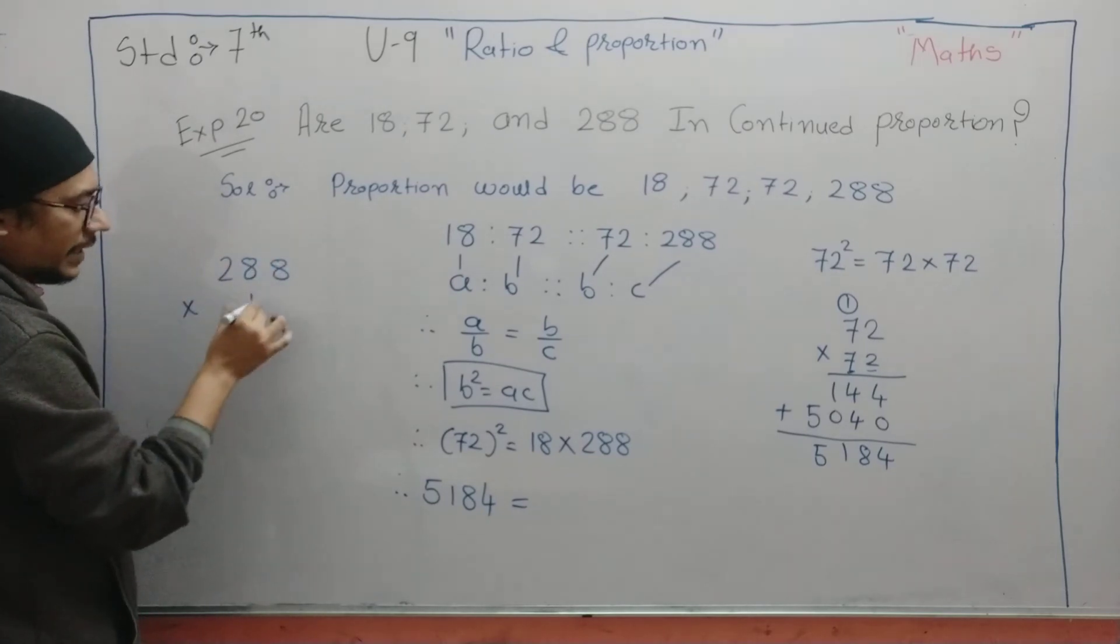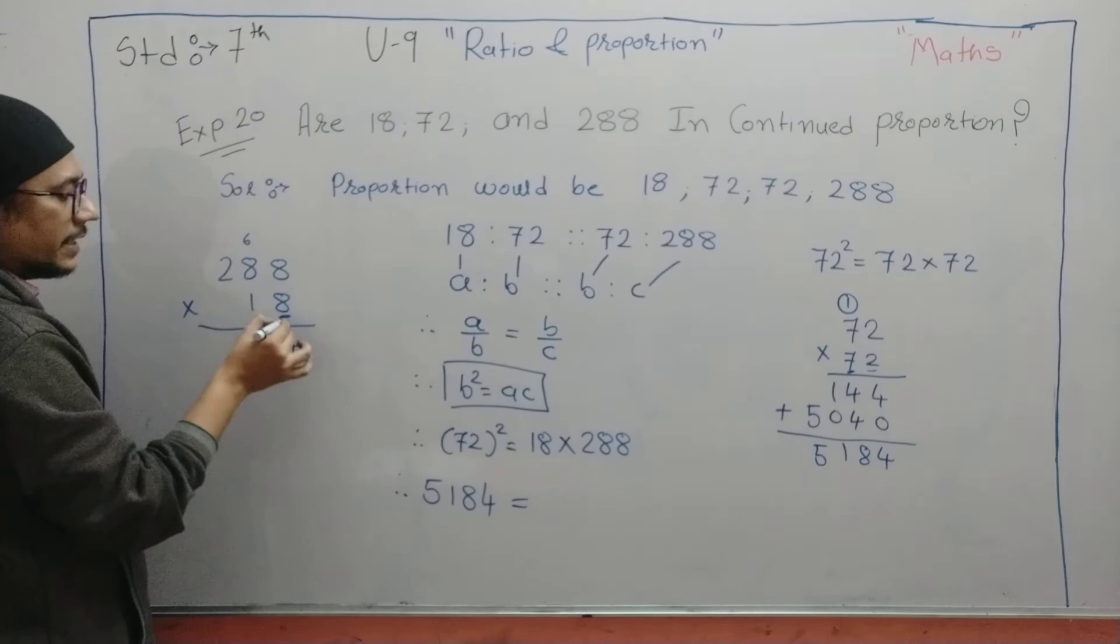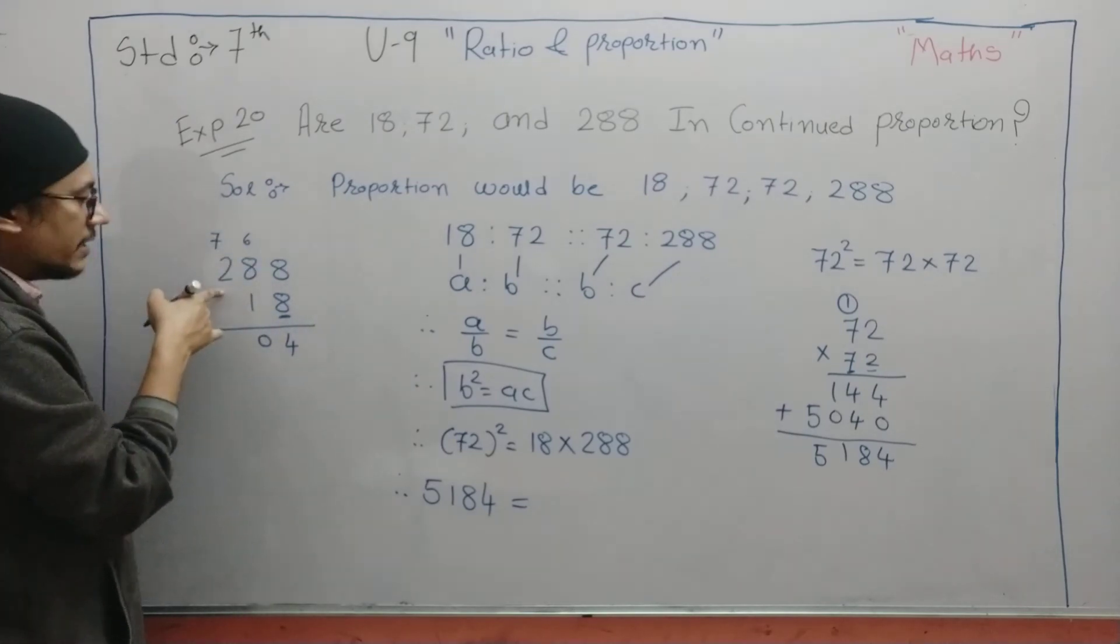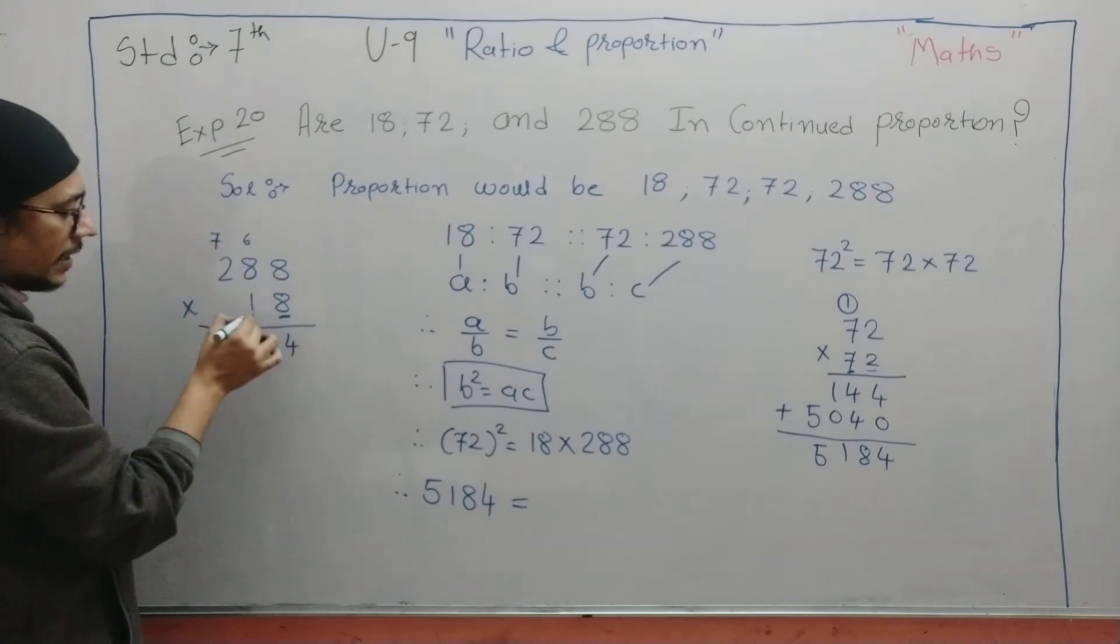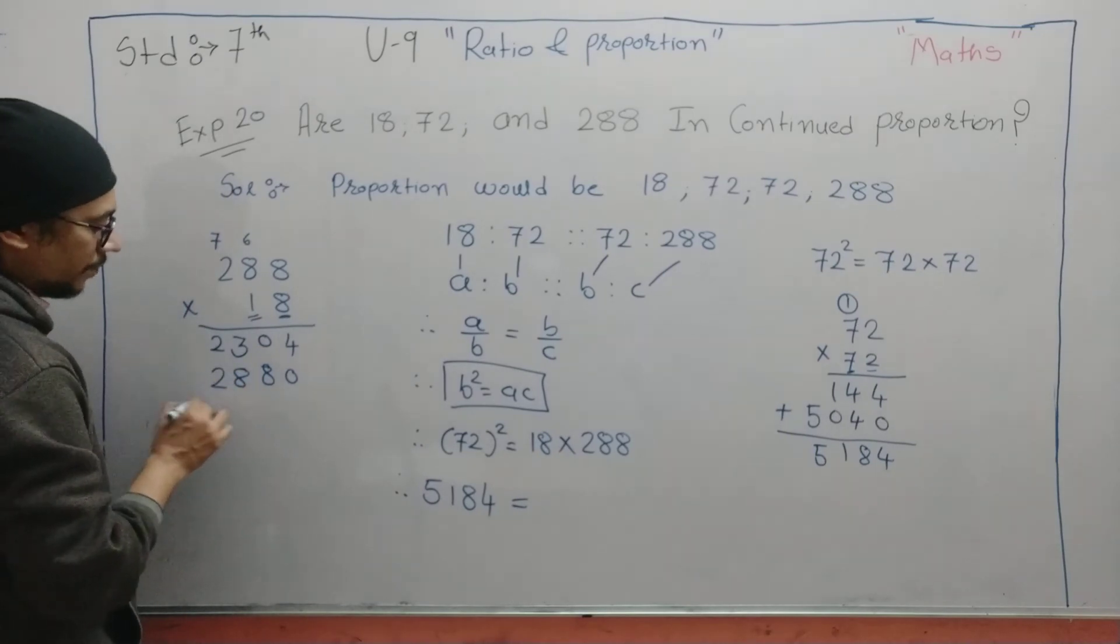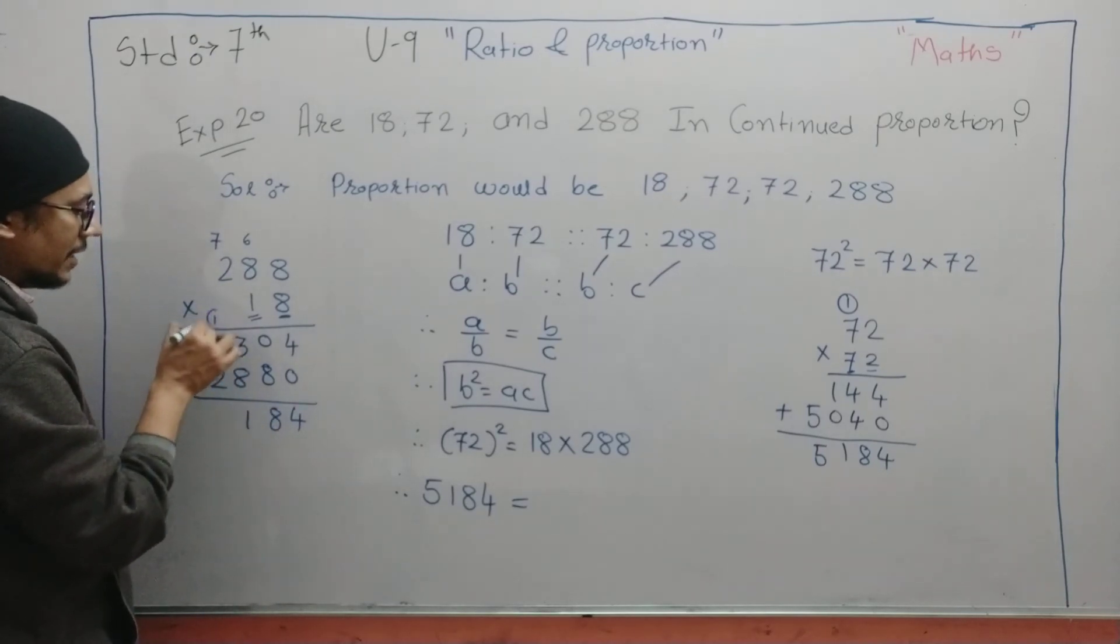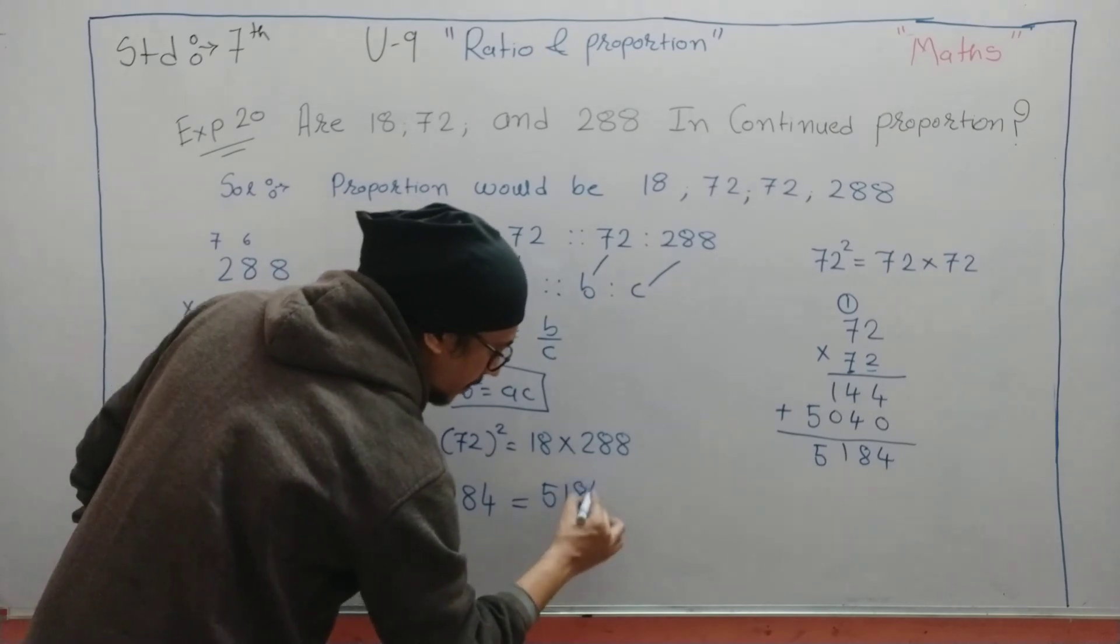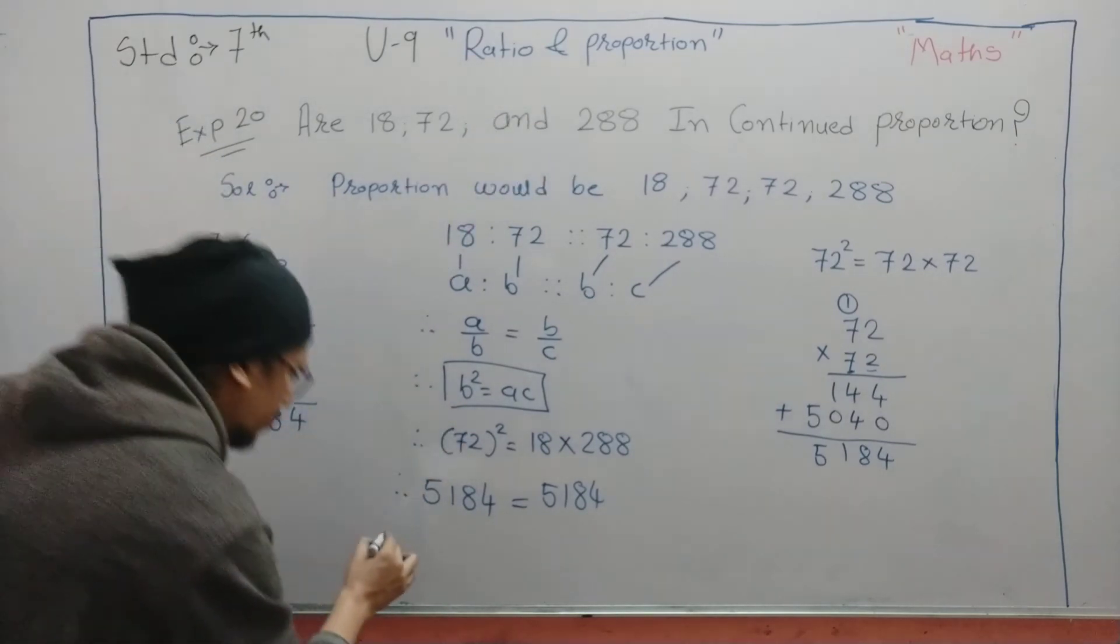Here we check 18 into 288. 288 into 18. Let us start with the unit place: 8 times 8 is 64, remainder will be 6. 8 times 8 plus 6 is 17, remainder will be 7. 8 times 2 is 16, 16 plus 7 is 23. Now for 1, it is at tens place, so put 0 over here. 1 times 8, 1 times 8, 1 times 2. Do the addition: 4 plus 0 will be 4, 0 plus 8 will be 8, 3 plus 8 will be 11, remainder will be 1, 2 plus 2 is 4, plus 1 is 5. So 5184.